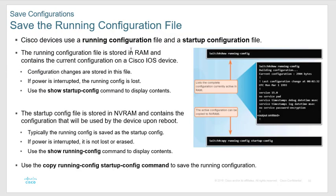Devices use a running config and a startup config file. The running config is in RAM — when you make changes they happen right away but aren't saved. To save them you move them to the startup configuration file. The startup config is only used when you boot the router, and a copy is made and put into RAM as the running config. The copy command is always copy from-to, so 'copy run start' saves your configuration.